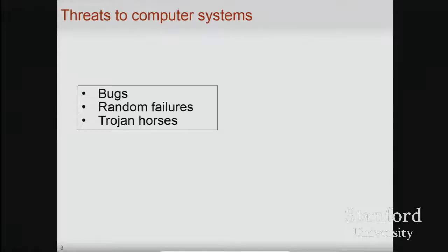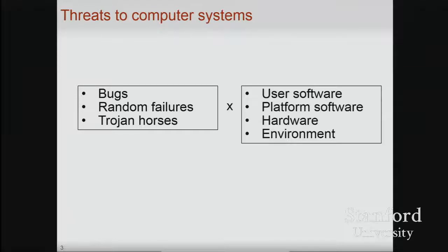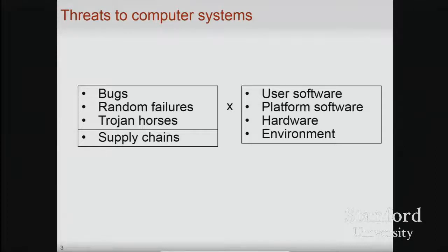We have numerous threats to our computer systems: bugs, random failures, the proverbial cosmic rays, Trojan horses. Even when we're not supposed to have these, supply chain issues can induce them along the way. Each of these applies at the level of user software, at the level of hardware, at the level of platform software — the hypervisor and operating system — and even the physical environment surrounding the computer. Each combination in this Cartesian product has made it to papers, news, and exploitation in the real world.